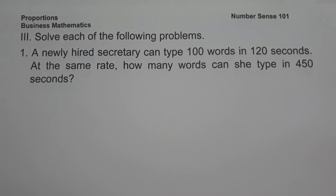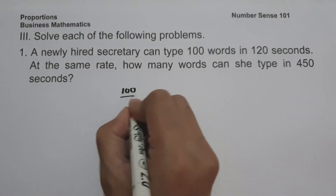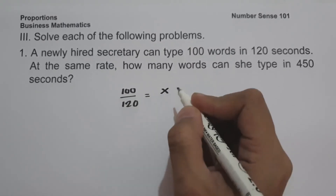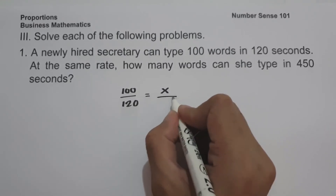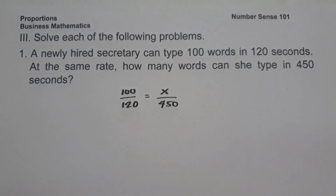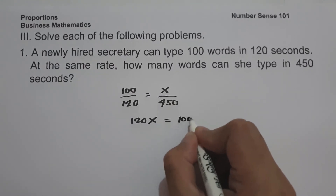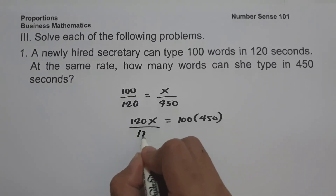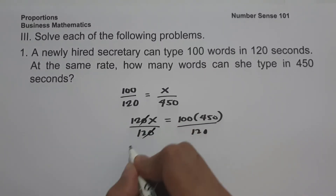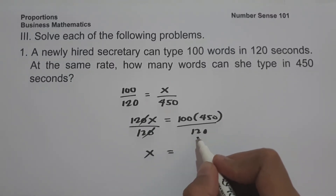On the last set of examples, we are going to solve word problems. On number one: a newly hired secretary can type 100 words in 120 seconds — at the same rate, how many words can she type in 450 seconds? We write the equation as 100 over 120 equals x over 450, then cross multiply: 120x equals 100 times 450. Dividing both sides by 120, since 100 and 120 are divisible by 20, 100 becomes 5 and 120 becomes 6.